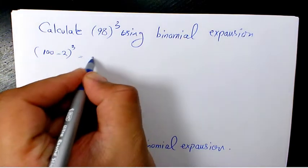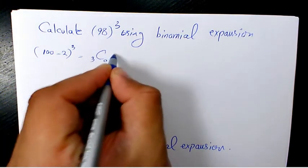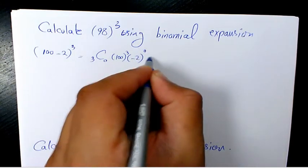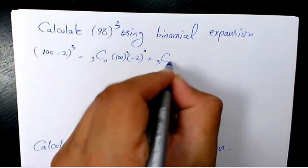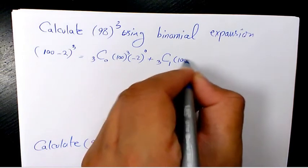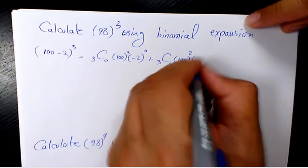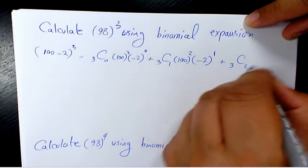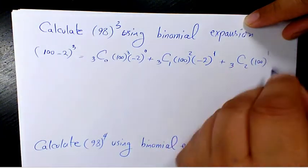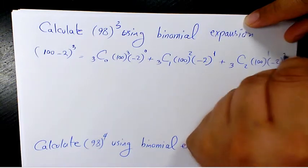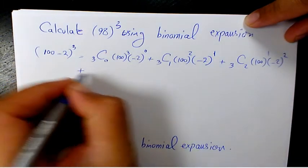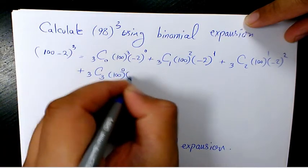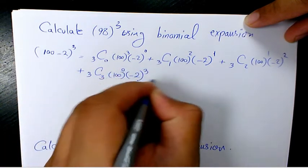So the expansion is going to be: 3C0 times 100 to the power of 3 times negative 2 to the power of 0, plus 3C1 times 100 to the power of 2 times negative 2 to the power of 1, plus 3C2 times 100 to the power of 1 times negative 2 to the power of 2, and the last term is 3C3 times 100 to the power of 0 times negative 2 to the power of 3.